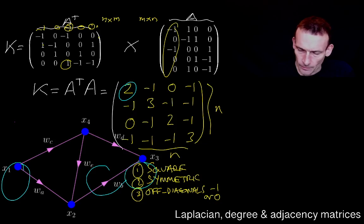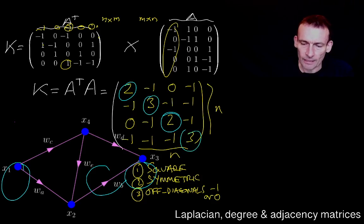And then the same thing over here for node three. And then you can see the other two nodes have three edges connected to them. So I wonder if the diagonal elements of the matrix K, the Laplacian, are connected to the number of edges meeting at the node.